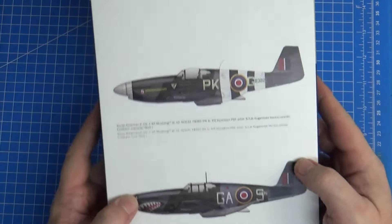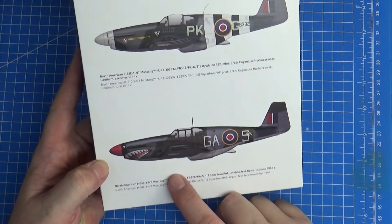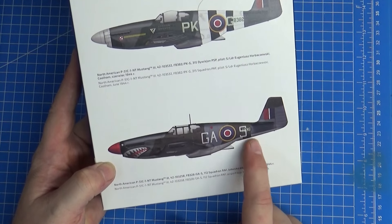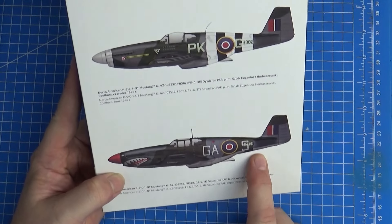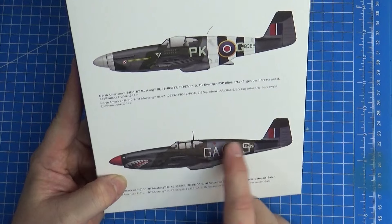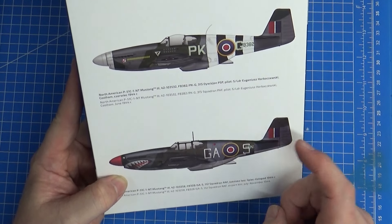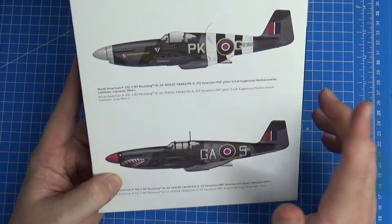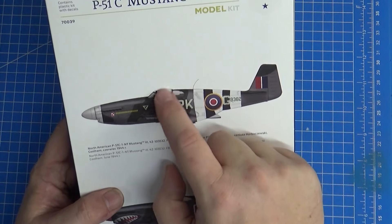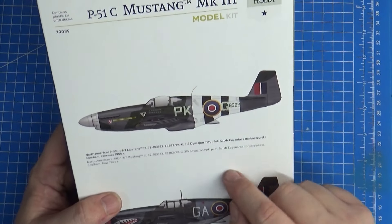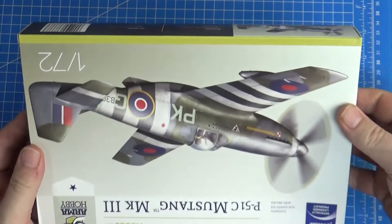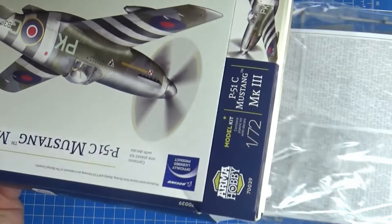Let's open it up. It's a box—nice lovely box art. On the back you've got two profiles: the C without the Malcolm hood, 112 Squadron RAF with the shark mouth, and the C with the Malcolm hood, the Polish one flown by Squadron Leader Eugeniusz Horbaczewski. I should know that—my late step-grandfather was a Polish pilot in World War II.